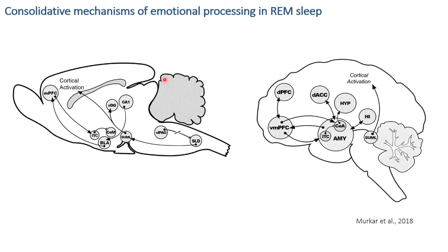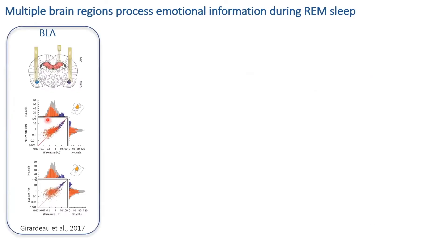REM sleep has long been associated with the processing and consolidation of emotional information, shown both in rodents and humans. This is linked to the activation of REM-on neurons in the brainstem, associated with theta hippocampal activity during REM sleep, which is in coherence with brain regions that process emotional information — such as the basolateral complex of the amygdala and the medial prefrontal cortex.